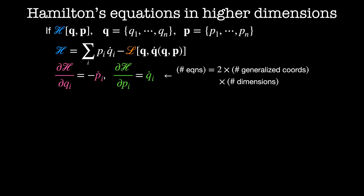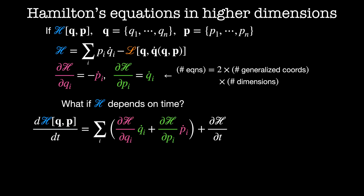Up until now, we've been making the assumption that the Lagrangian doesn't depend on time, which means the Hamiltonian is conserved. But what if the Hamiltonian depends on time? The total derivative of the Hamiltonian with respect to time is equal to the sum on i of dH by dQ_i times Q_i dot, plus dH by dP_i times P_i dot, plus the partial derivative of the Hamiltonian with respect to time. From Hamilton's equations, the first two terms cancel out, and the total derivative of the Hamiltonian with respect to time is just equal to the partial derivative of the Hamiltonian with respect to time.